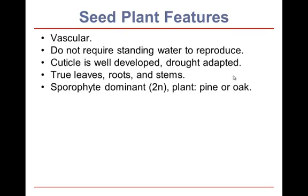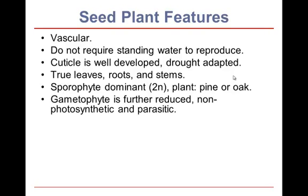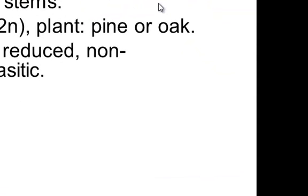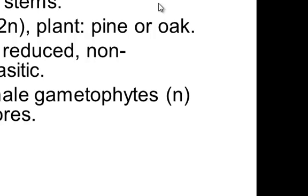In seed plants the sporophyte is dominant. When you look at a plant — be it a pine tree, an oak tree, a grass plant, a poppy flower, or a rose — those are all sporophytes that you are seeing. The gametophyte, the other stage in alternation of generations, is even further reduced. They are non-photosynthetic, they are parasitic, and they are microscopic. We have separate male and female gametophytes that arise from separate spores, and here it always happens.